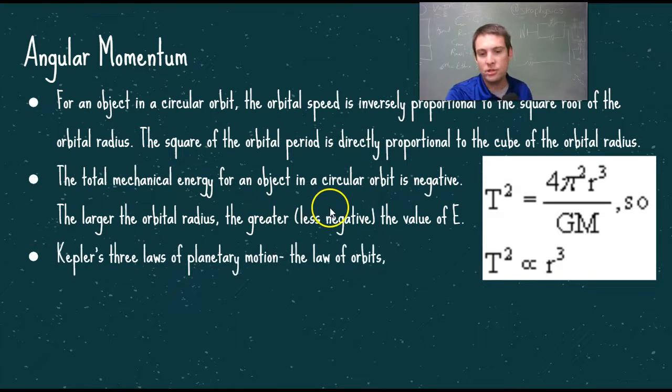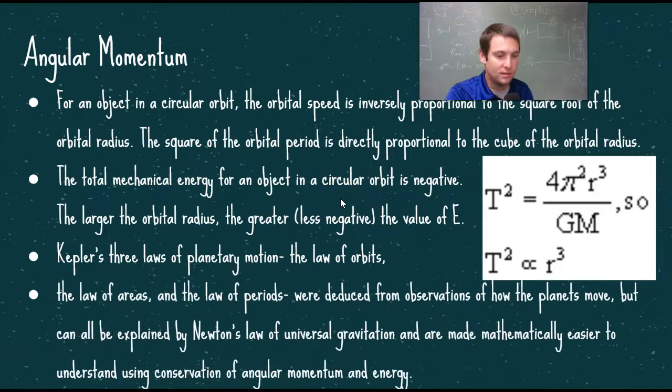Kepler's three laws of planetary motion: first law, the law of orbits - all orbits are ellipses. The law of areas, equal sweeps and equal times, and the law of periods, shown here, were deduced from observations of how the planets move, but all can be explained by Newton's law of universal gravitation and are made mathematically easier to understand using conservation of angular momentum and energy.